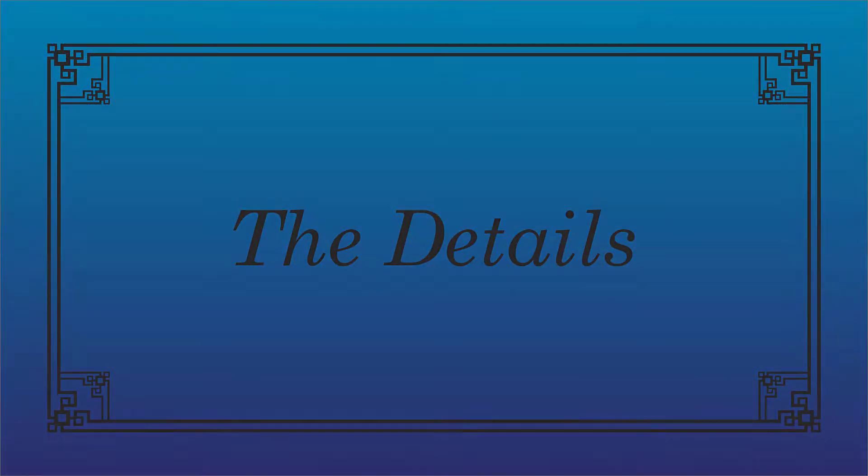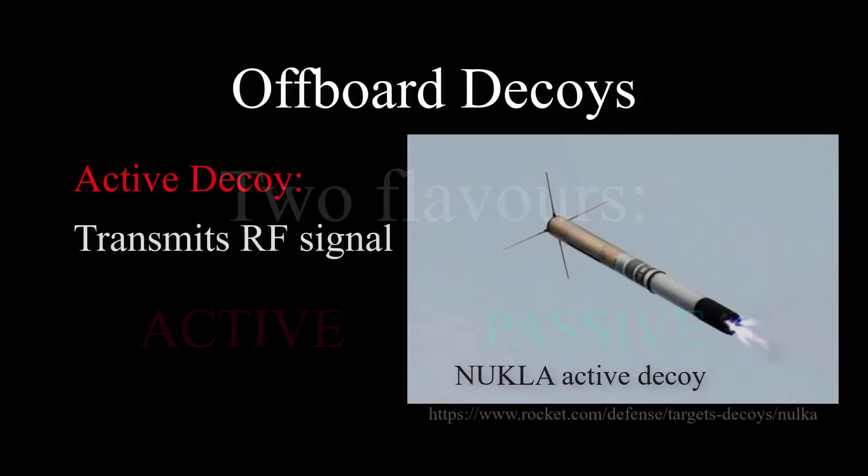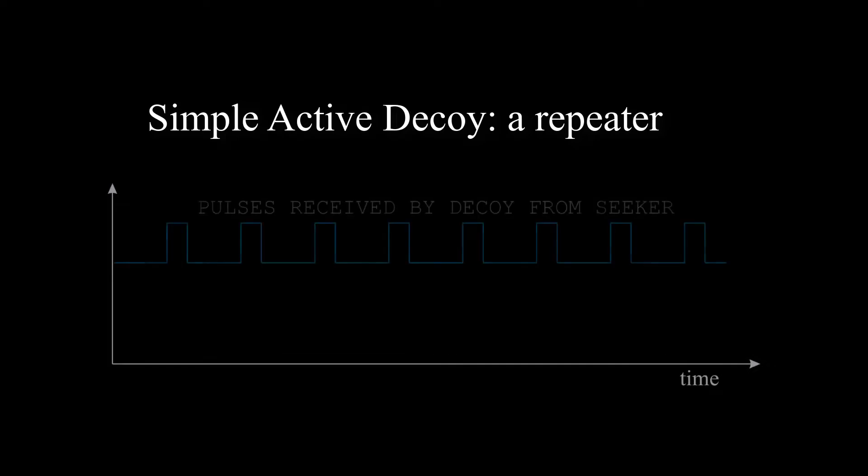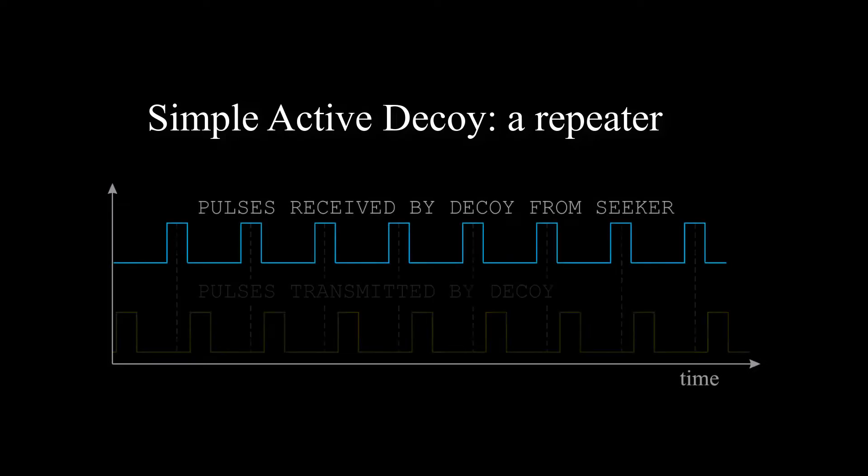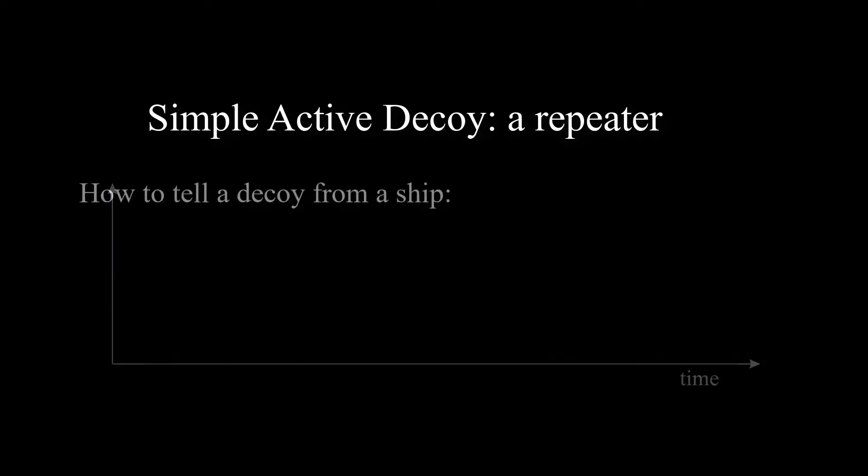So here are the details. Decoys come in two flavors, active and passive. Active decoys transmit signals back to the seeker, and passive ones just reflect the radar pulses. Now suppose, for the sake of discussion, that an active decoy is really simple. It just repeats a seeker pulse back to the seeker without changing the pulse. In this simple case, there are a few ways the seeker can tell the ship from the decoy.